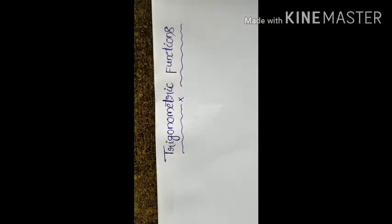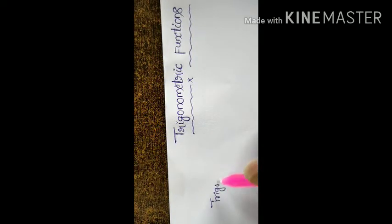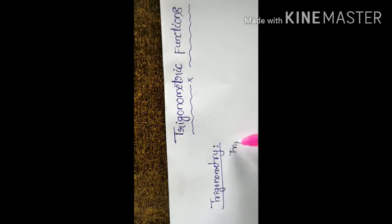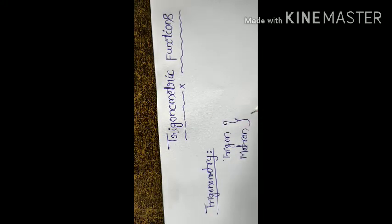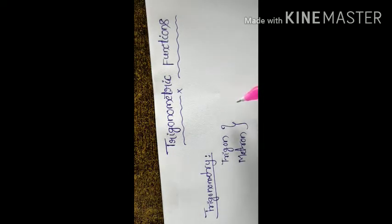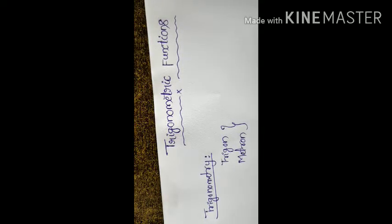Trigonometry is a branch of mathematics that studies triangles and the relationship between their sides and angles. The word Trigonometry is derived from the Greek words — Trigon and Matron. Trigon means triangle, and Matron means measurement.